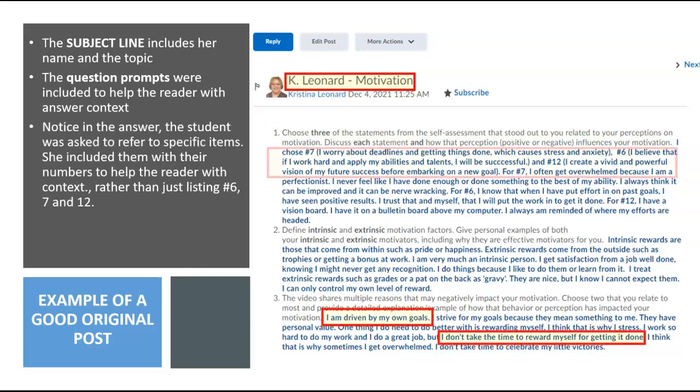Avoid vague references. In question 1, just saying I chose items 6, 7, and 12 provides no context. By including the actual statement as in question 1 or the gist of it like in question 3, you help the reader understand your response.